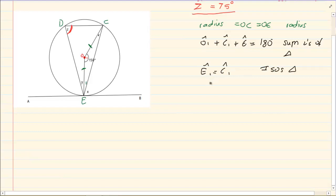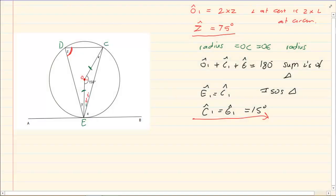I also know that E1 equals C1 because it is an isosceles triangle. If O1 is 150 degrees, then E1 and C1 together equal 30 degrees, so each is 15 degrees. Therefore I have that E1 is 15 degrees and Z is 75 degrees.